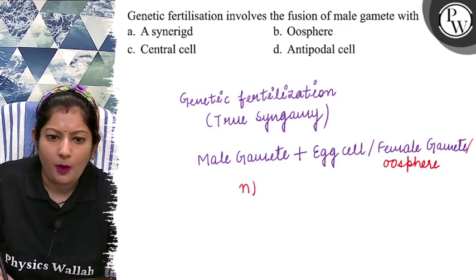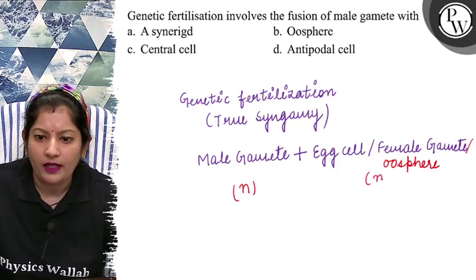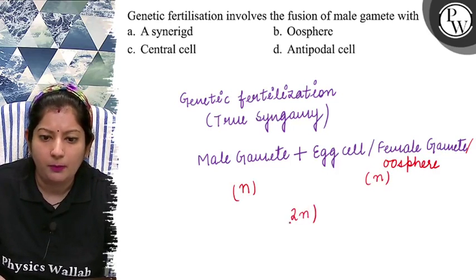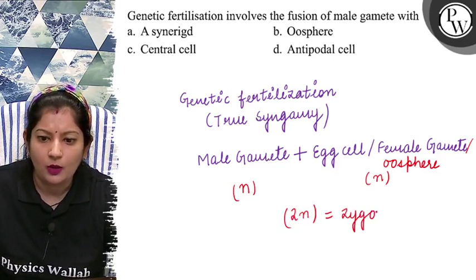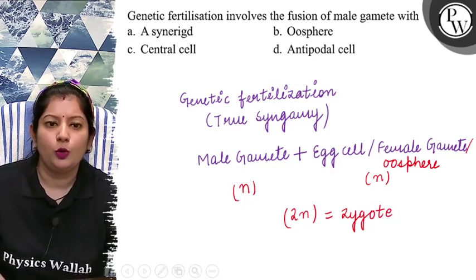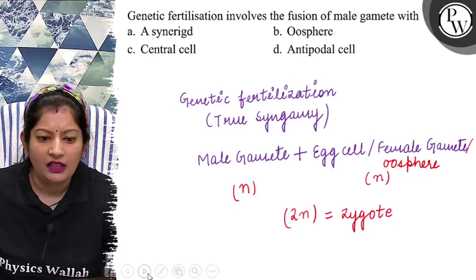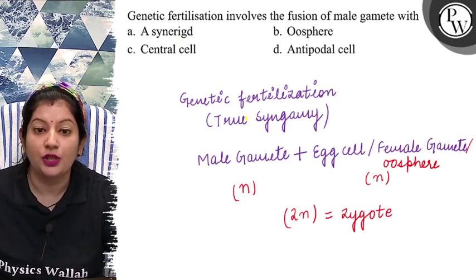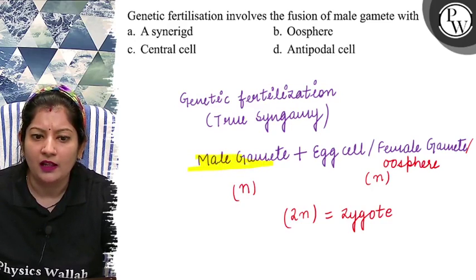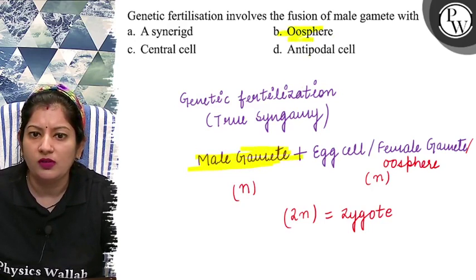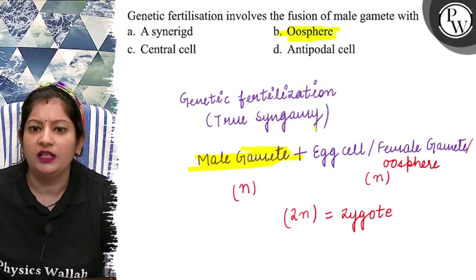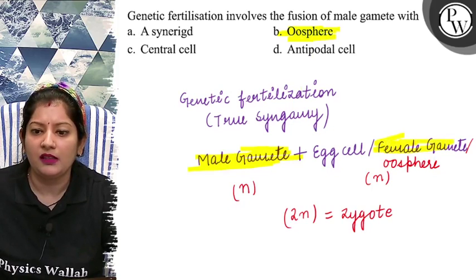अब इसकी ploidy end क्या बन गया? Diploid structure, जिसको हम zygote बोल देते हैं। तो question में हम से यही पूछा गया है कि genetic fertilization में जो male gamete है, यह male gamete किसके साथ fuse कर लेता है? Oosphere के साथ, या आपके female gamete के साथ।